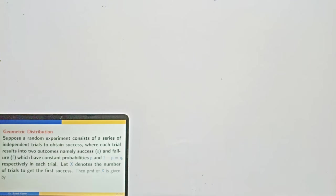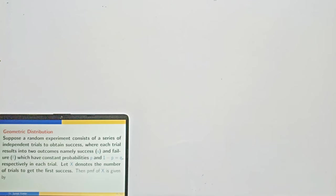X denotes the number of trials to get the first success. So the conditions are: series of independent trials, each trial results into two outcomes success and failure with constant probabilities P and Q respectively, and X denotes the number of trials to get the first success.